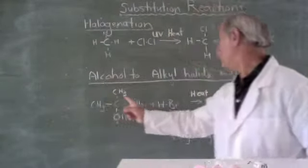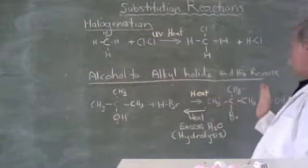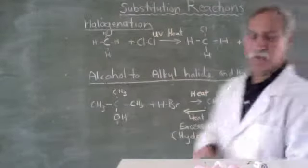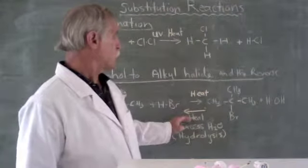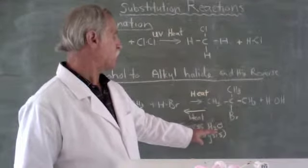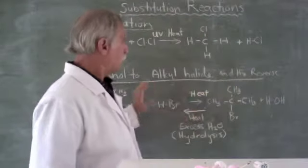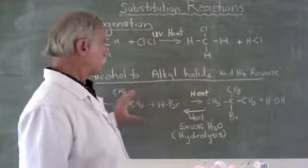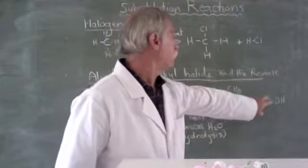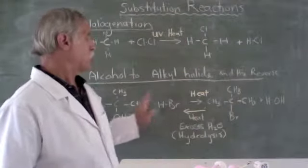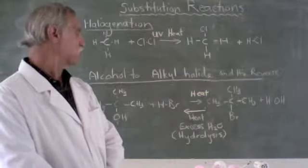So we have to look at what conditions will favor going this direction. And it requires heat to form this plus water. The reverse reaction also requires heat, and it requires an excess of water. So when there's a lot of water around in the reaction and heat, we can force it to go the other way, and we can lose the bromine, pull the bromine off, add on the OH, and form HBr. So this reaction, easy to remember, can go in both directions.